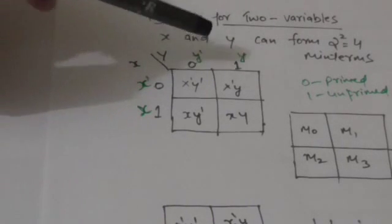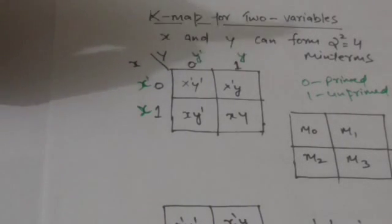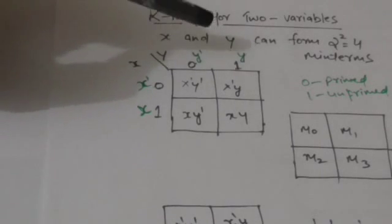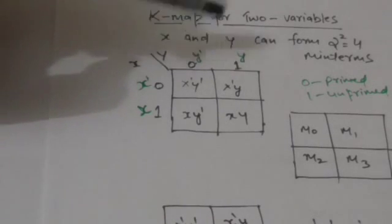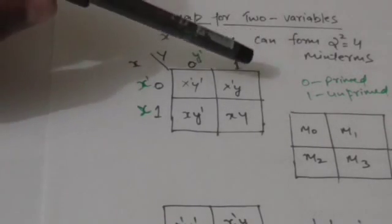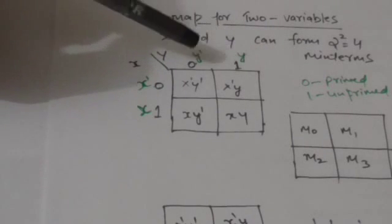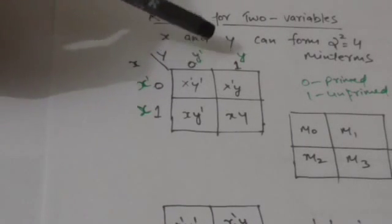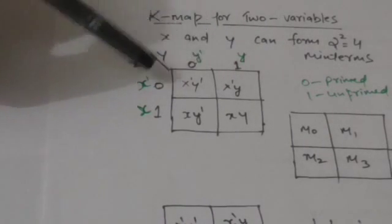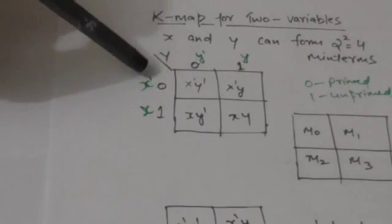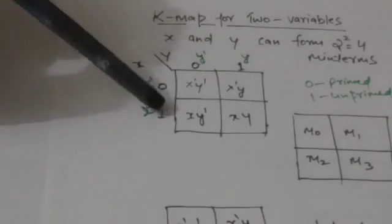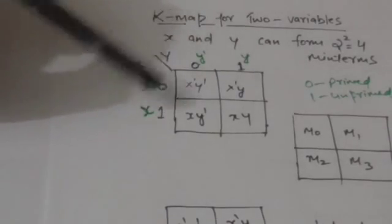0 represents the complement form of the variable and 1 represents the normal form of the variable. So here, 0 represents y-naught, 0 represents x-naught, 1 represents y, and 1 represents x.